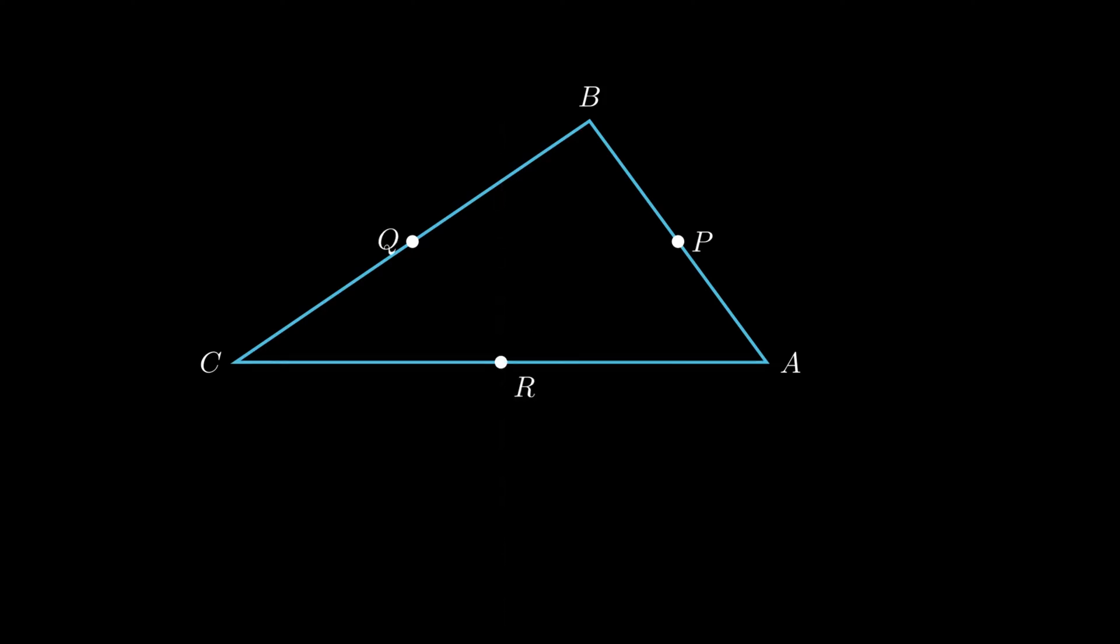Let point P, Q, and R be the midpoints of segments AB, BC, and segment AC. The point where all three medians intersect is called the centroid and is denoted by point G. Now, to prove that centroid G divides median BR in the ratio 2:1,